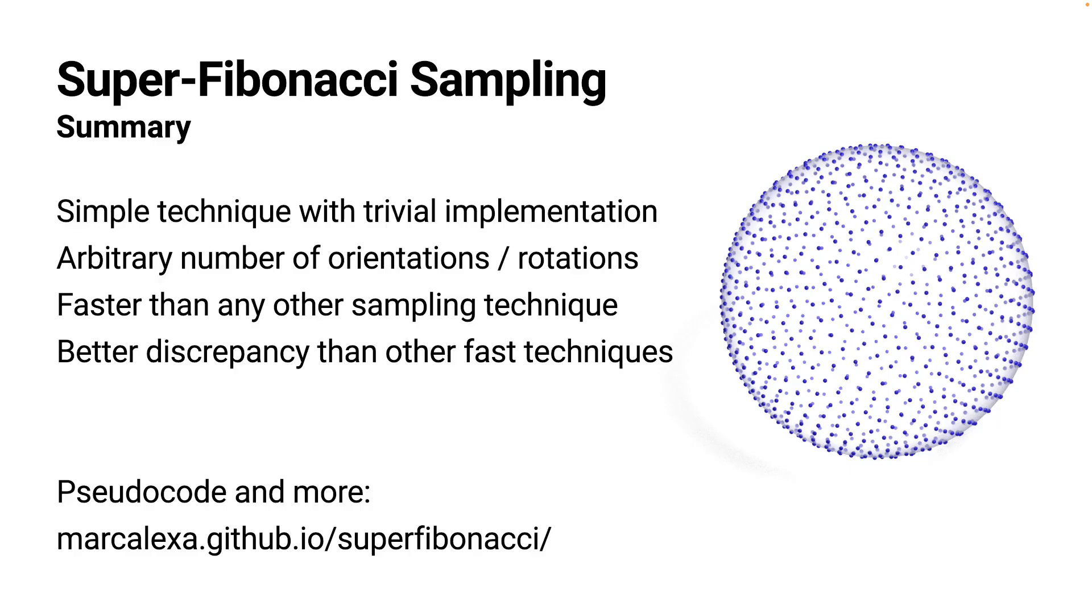Summarizing, super-Fibonacci sampling is a very simple technique with trivial implementation that can generate an arbitrary number of orientation samples very quickly, and the samples are very well distributed.